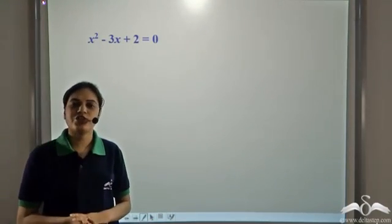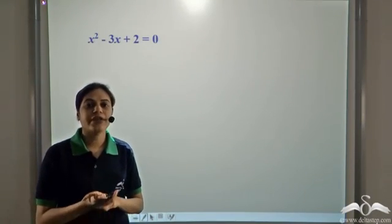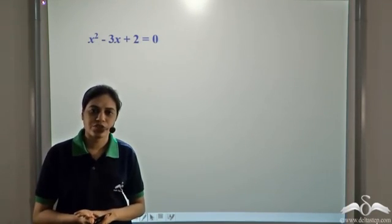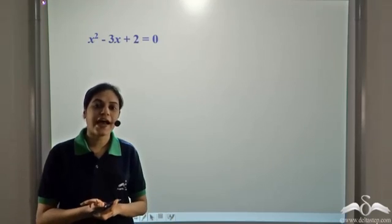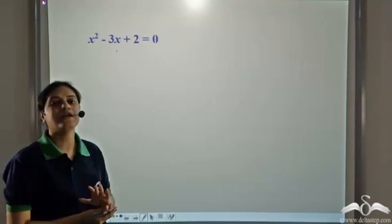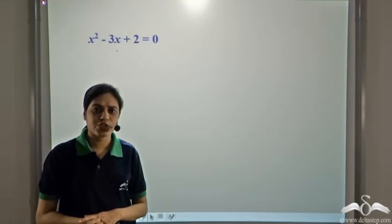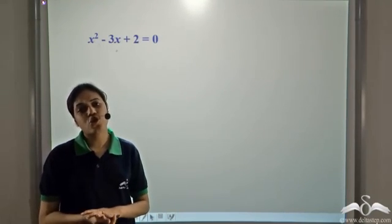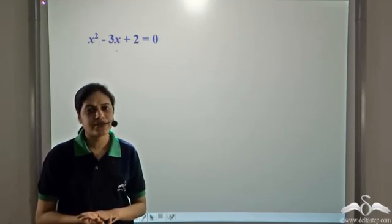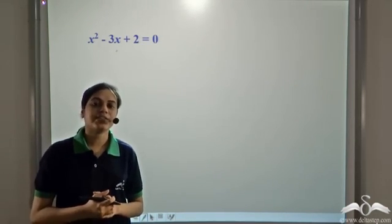This is a quadratic equation in one variable x. In order to solve this equation, we need to find that value of the variable x which satisfies this equation. That is, we need to find that value of x for which the left hand side of the equation becomes equal to the right hand side, which is zero. So how do we solve this equation? One way is to solve it by hit and trial. But hit and trial is not a good method because it may take a lot of your time and effort to reach the correct solution.